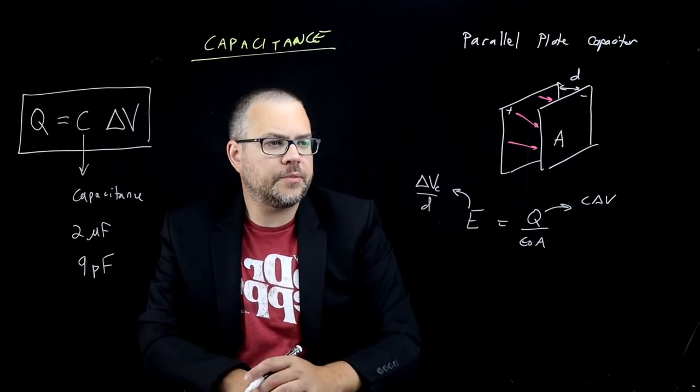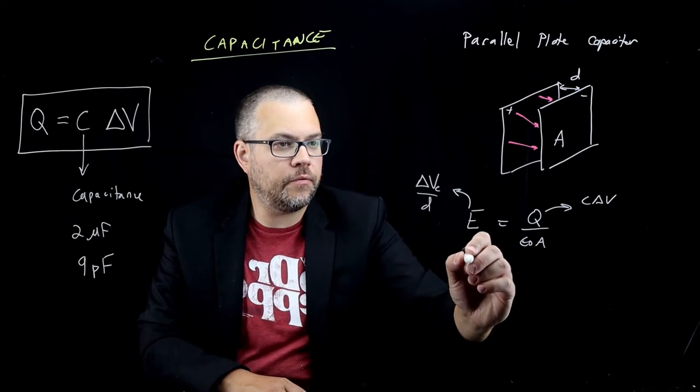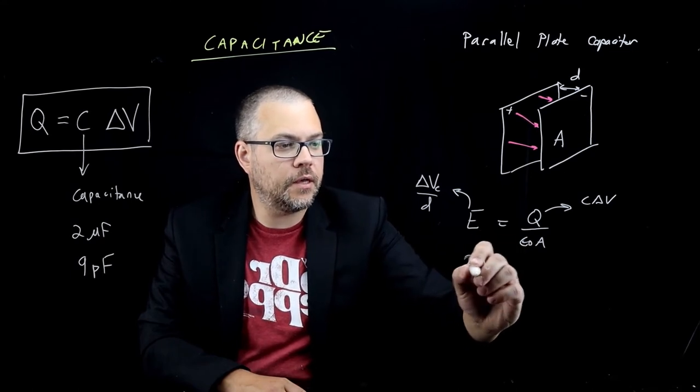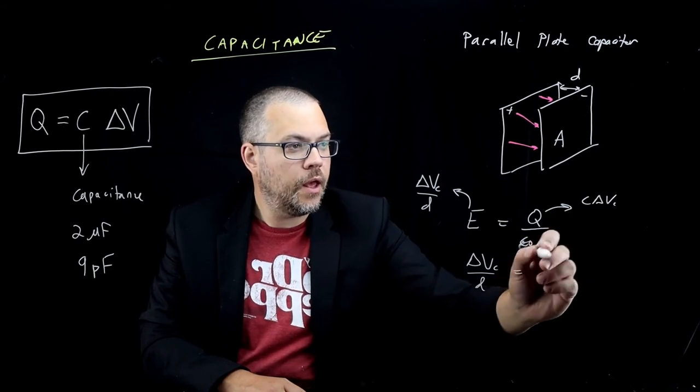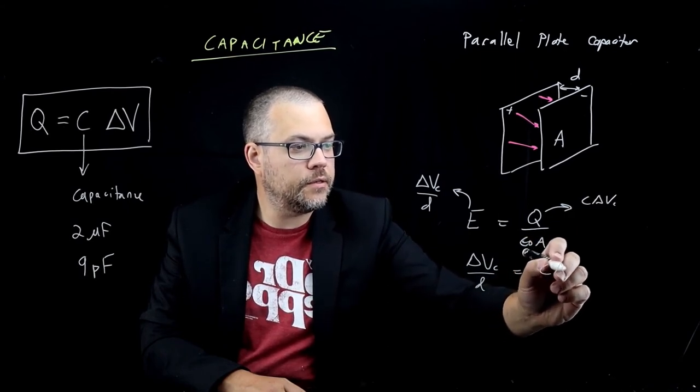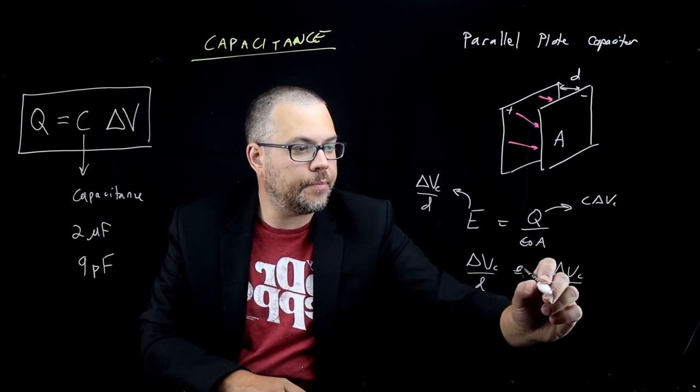So that's it. I'm going to make those two replacements. And when I do that, I'll write it out in full here. We'll have delta V_C over D equals—I'll put a little C right here too—equals, instead of Q, C delta V_C divided by epsilon naught A.